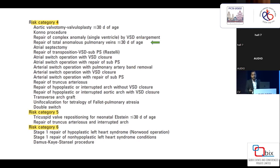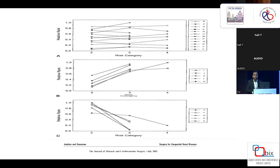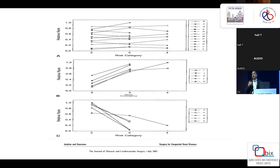Any unit can decide which risk stratification to adopt. RACS 5 has only two procedures: truncus with interruption, and neonatal Ebstein's with tricuspid valve repair. RACS 6 is Norwood and the DKS procedure. Although there are many other procedures that need to be included in the RACS, most procedures are already there. If you stratify using the RACS score, a top-performing unit may show equal results across RACS 2 to 4, while RACS 5 and 6 carry very high risk with some increase in mortality.